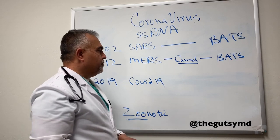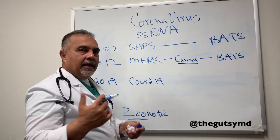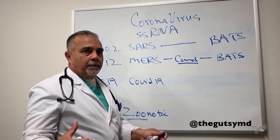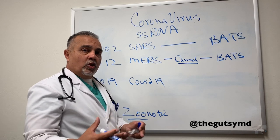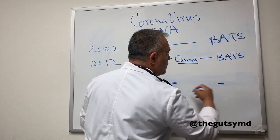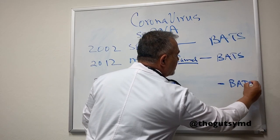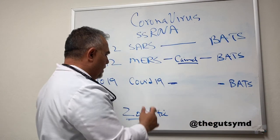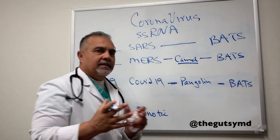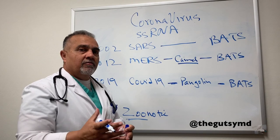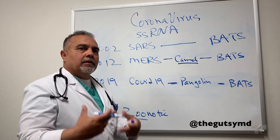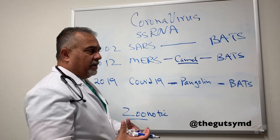Now let's get to 2019 and the current pandemic. While the dust has not fully settled, the leading theory is that there was an intermediary, and then the ultimate source was bats. That intermediary is this bizarre little creature called a pangolin — a tiny anteater found in the jungles of Malaysia. It's smuggled from there to mainland China, where it's consumed as an exotic wild animal.